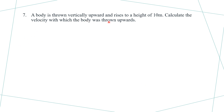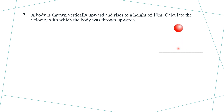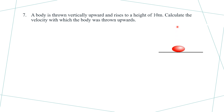Example number 7: a body is thrown vertically upward and rises to a height of 10 meters. Calculate the velocity with which the body is thrown upwards. Since at maximum height the final velocity is zero, we calculate the initial velocity u.